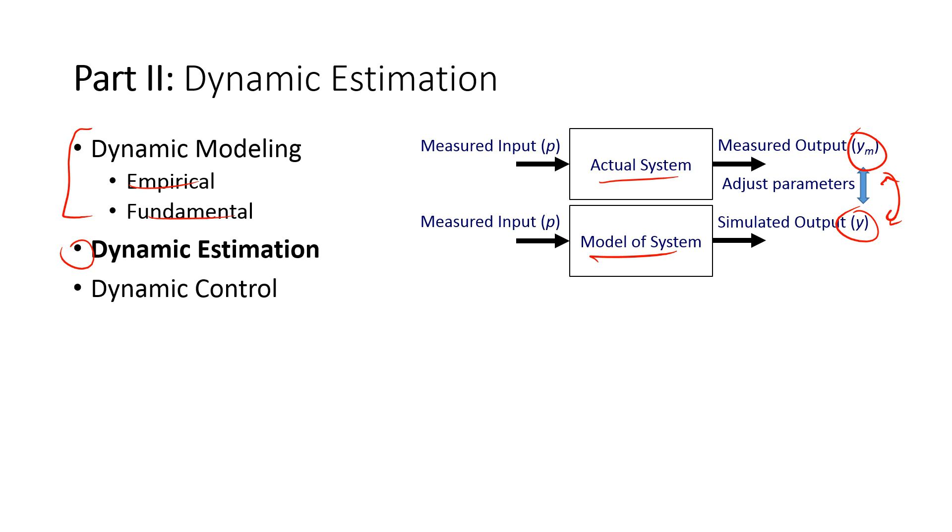We may want to discover something happening with some of our states in our model of our system that we can't necessarily measure, or we want to adjust parameters in our model so that our model becomes more accurate for future predictions. There's a lot of reasons why we would want to do dynamic estimation.